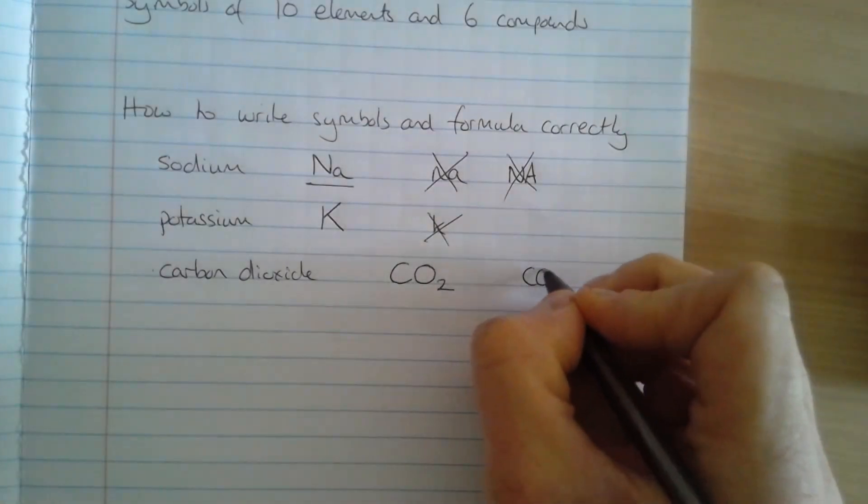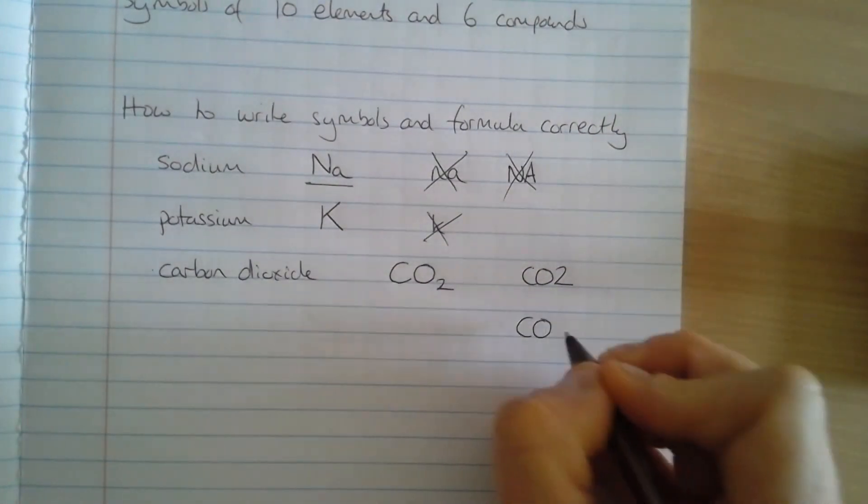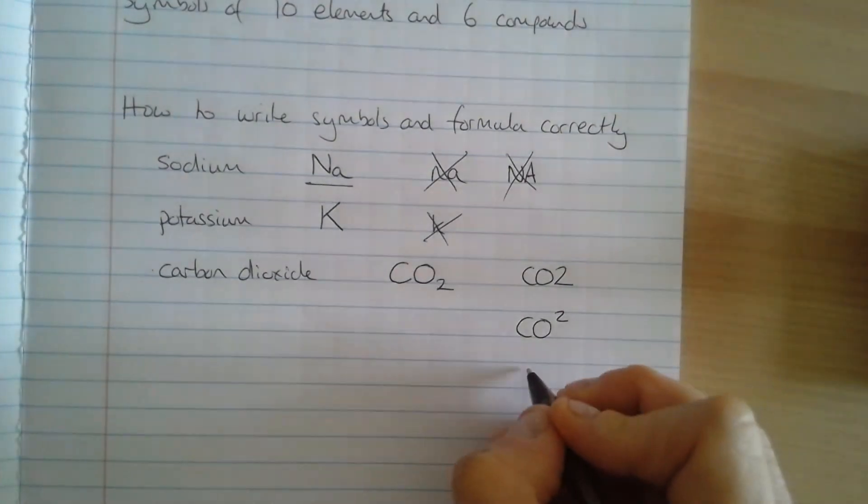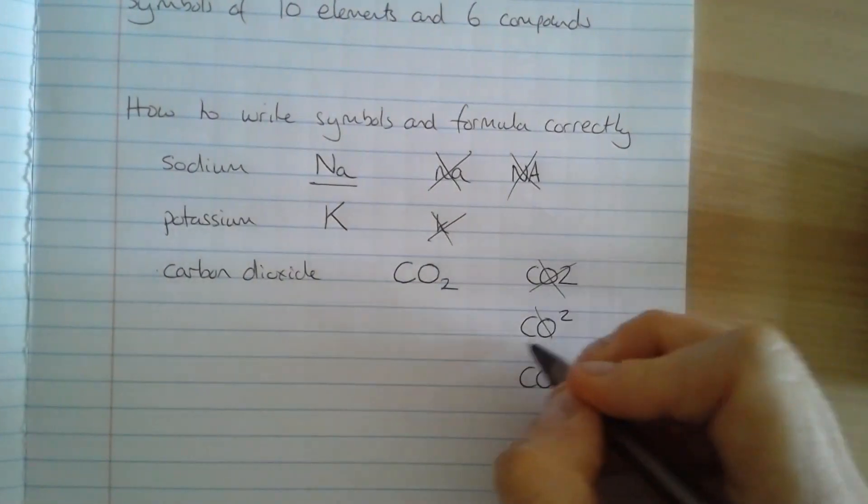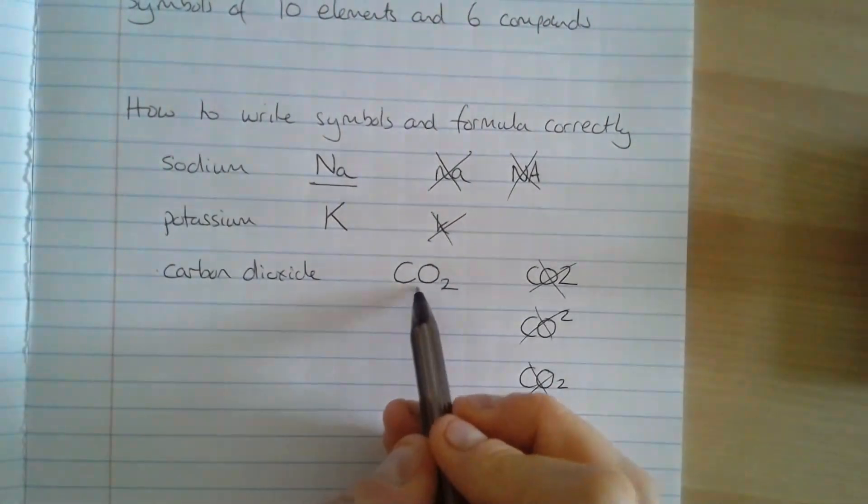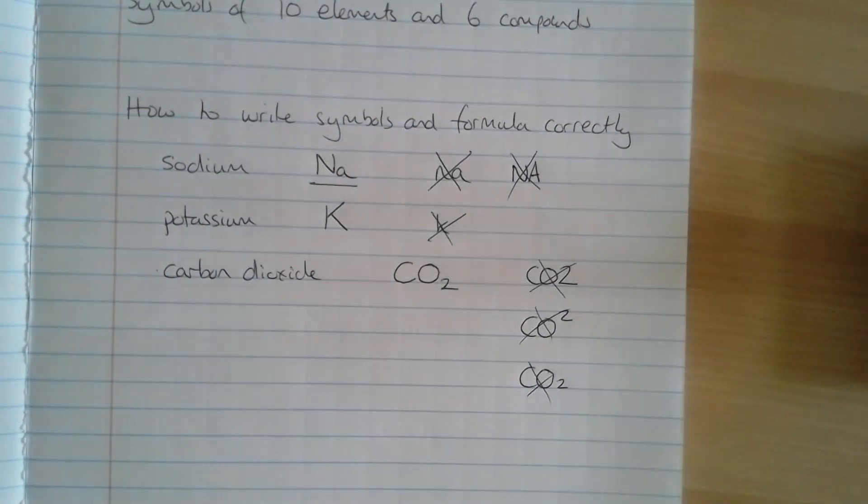So we should try and avoid writing things like that. That wouldn't be correct. That wouldn't be correct. And also that wouldn't really be correct. So we're after capital letter, capital letter, and a small two in between the line there like that.